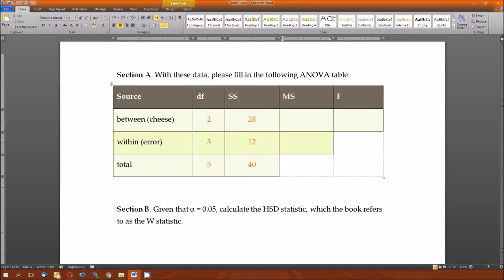The mean squared is equal to the sum of squares divided by the degrees of freedom. 28 divided by 2 is 14. 12 divided by 3 is 4. If you had wanted to, the mean squared total would be 40 divided by 5, which is 8. But I didn't ask for that. And the f is just the ratio of the between to the within. 14 divided by 4 is 3.5. Get rid of that. We didn't need it.